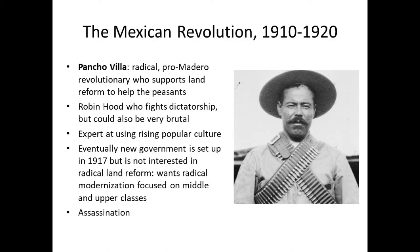The Mexican Revolution is hard to pin down to a single end year — 1920 is commonly used — but eventually a new government was set up in 1917. By 1917 it seemed the revolutionaries had triumphed over Díaz's generals. However, this new government was not interested in radical land reform as Pancho Villa had fought for; instead, it wanted radical modernization focused on the middle and upper classes, typically meaning the cities, rather than on the poor.